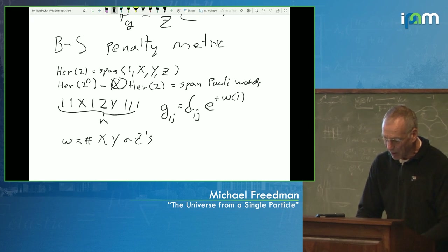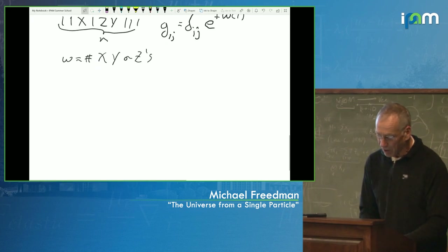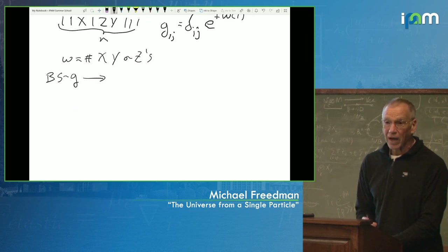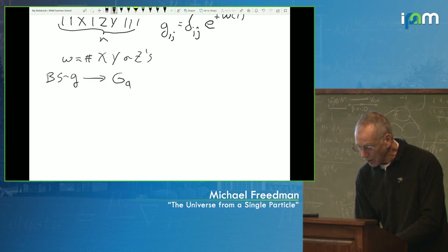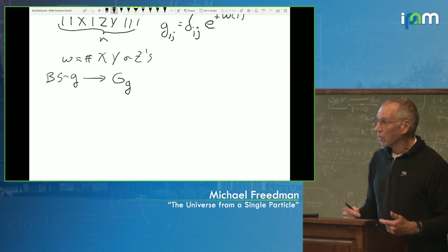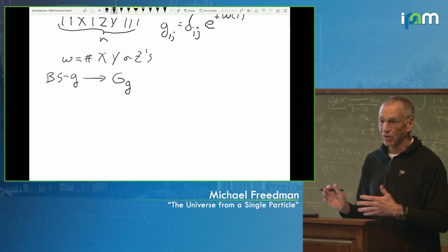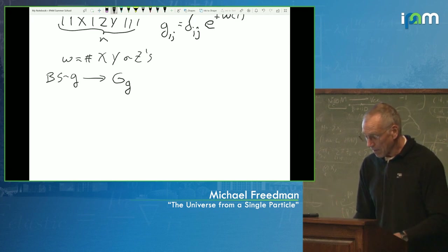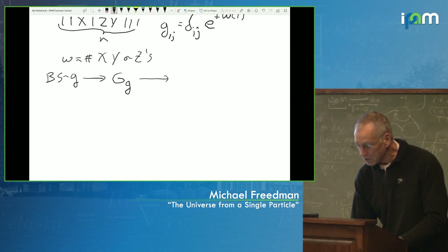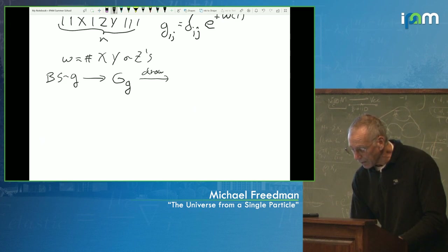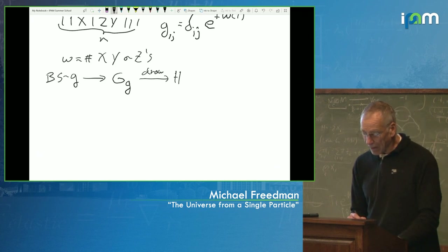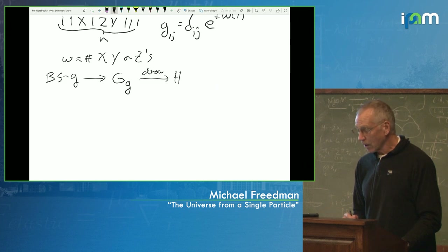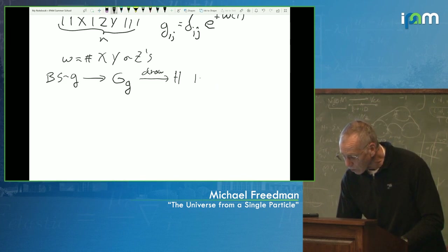Here's what I want to point out about a metric like this. We start with the Brown-Susskind metric, then make from that a Gaussian distribution based on that metric — measuring length squared in the new metric instead of the L2 metric — giving a new probability distribution on the space of Hamiltonians. Using that probability distribution, you draw a Hamiltonian. What you'll see when you draw this Hamiltonian at random is it won't look like a Hamiltonian drawn from the GUE — it will look like interacting physics.